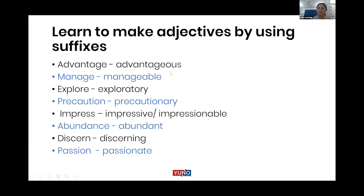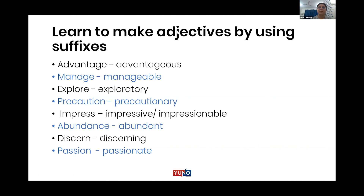So let's review — advantage/advantageous, manageable, exploratory, precautionary — we had these words — impressive, impressionable, abundant, discerning qualities you should have, then passionate. Are these words clear to everybody? Harish, you asked in between — have you understood the meaning of all the words done so far? Yes. But remember, we need to use them correctly; if you use them wrongly, you lose points.